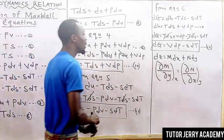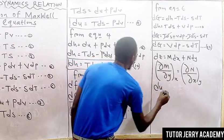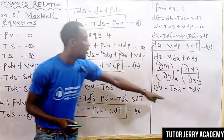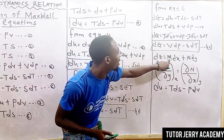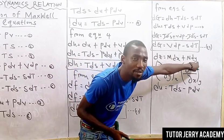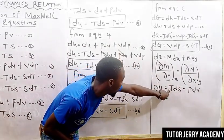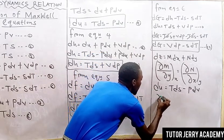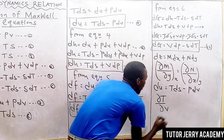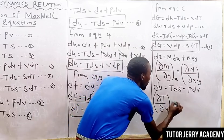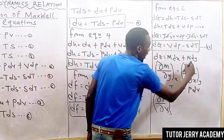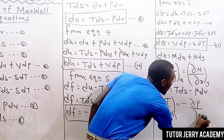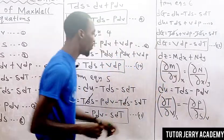From equation nine: dU equals T dS minus P dV. Applying the exactness condition, the partial derivative of T with respect to V, keeping S constant, equals minus the partial derivative of P with respect to S, keeping V constant. This is the first Maxwell equation. From equation ten: dH equals T dS plus V dP. Applying the exactness condition, the partial derivative of T with respect to P, keeping S constant, equals the partial derivative of V with respect to S, keeping P constant. This is the second Maxwell equation.